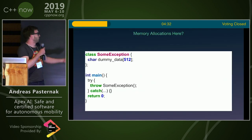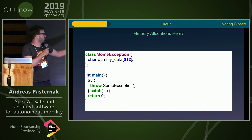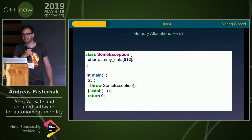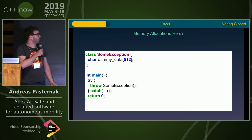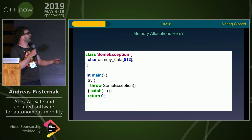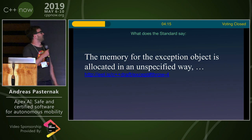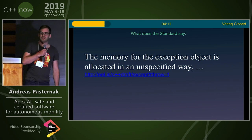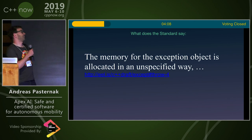If I would ask you guys, where do memory allocations happen in this code? Maybe it does allocate some memory, but let's investigate a little bit more. What better way to do that than to consult the C++ standard? And what does the C++ standard say? The memory for the exception object is allocated in an unspecified way. It didn't give us a clear answer.